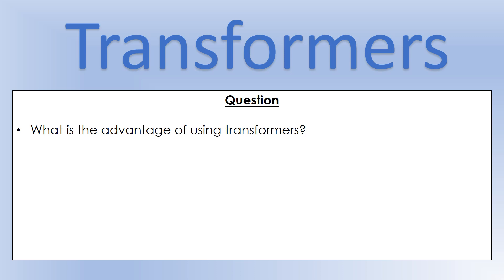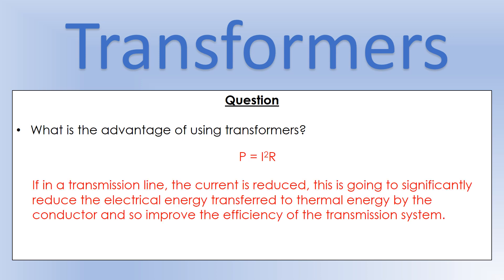What is the point of a transformer? The key is the equation P = I²R — the power transferred to heat by a transmission line (which is a resistor). If the current is smaller, the energy lost to heat is significantly reduced as electricity travels across the country. By using a transformer to make the voltage very high, we make the current very low, minimising transmission losses. This is why Nikola Tesla invented the transformer and advocated the use of AC electricity.